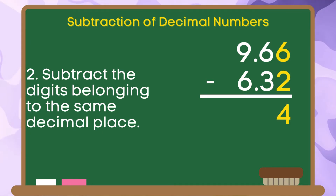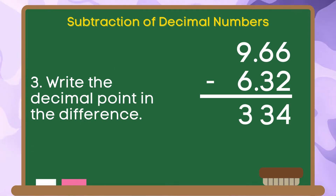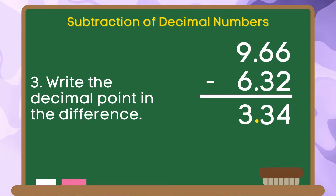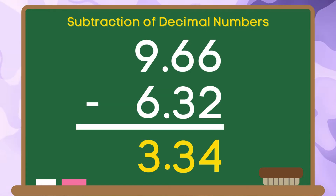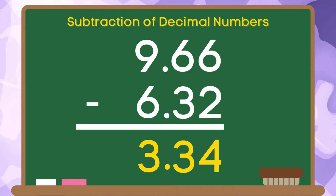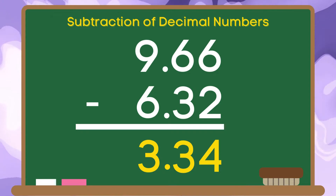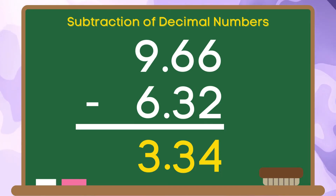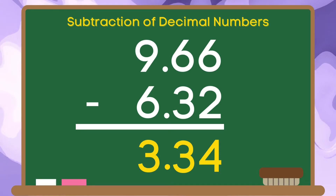6 minus 2 is equal to 4. 6 minus 3 is equal to 3. 9 minus 6 is equal to 3. And for the last step, write the decimal point in the difference. Therefore, if you are going to subtract 6 and 32 hundredths from 9 and 66 hundredths, the answer is 3 and 34 hundredths.